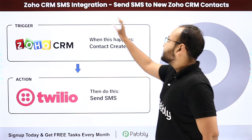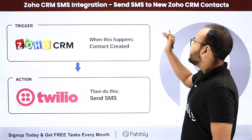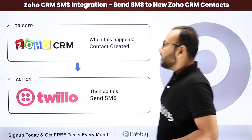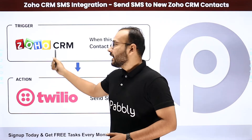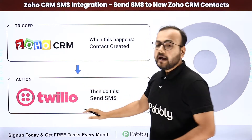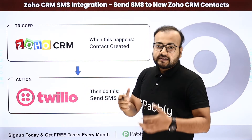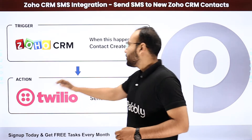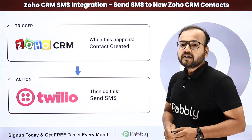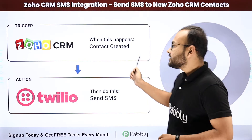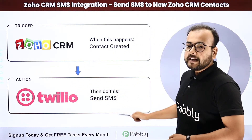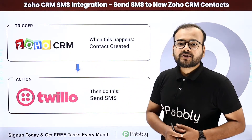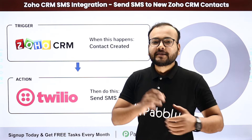The next automation we have is Zoho CRM and SMS integration. With the help of this, we can send SMS to new Zoho CRM contacts. For that we need to connect Zoho in the trigger and the Twilio application in the action, by which you can send SMS to your people automatically. Whenever you are going to create any new contact in Zoho, an SMS will be delivered automatically to that lead via Twilio. You can use this automation for sending any kind of transactional or promotional SMS.